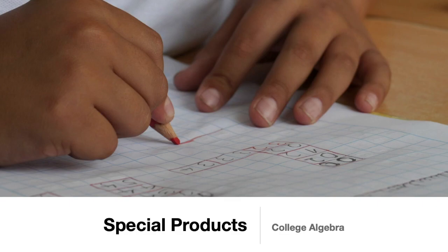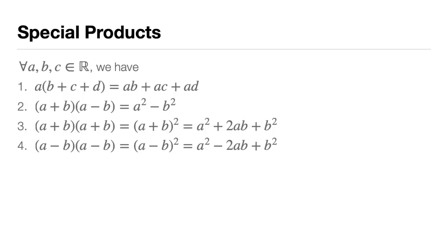Special products are the products of two or more polynomials which show certain patterns. We're going to talk about the first batch, which includes four of them.